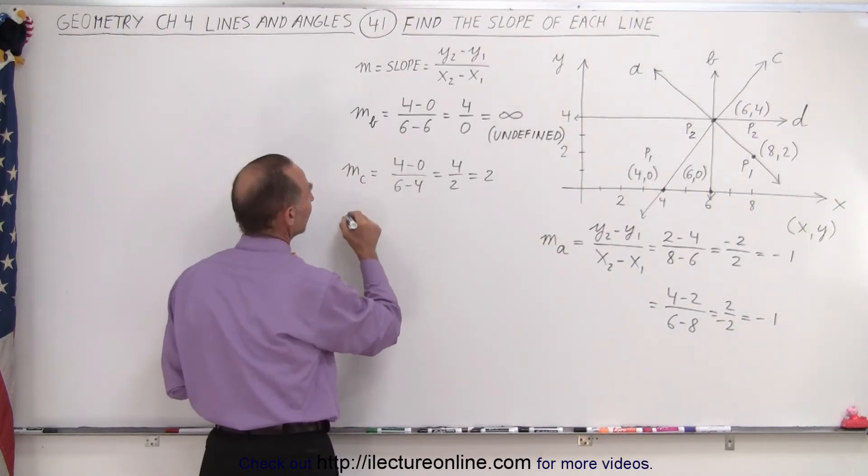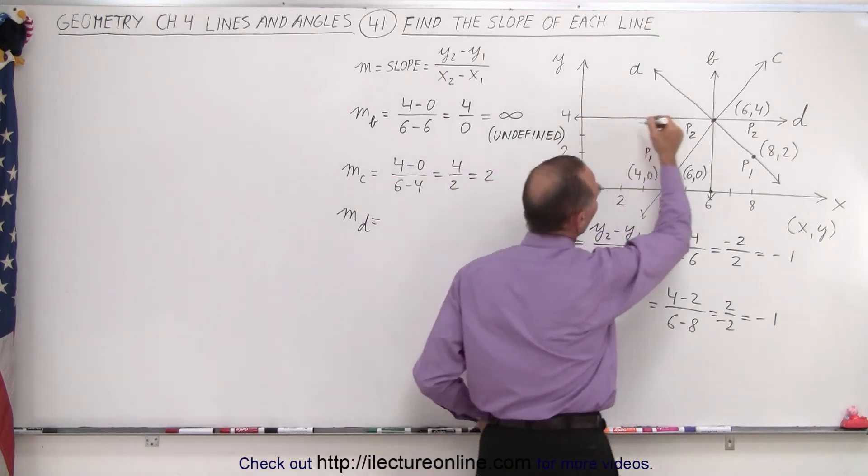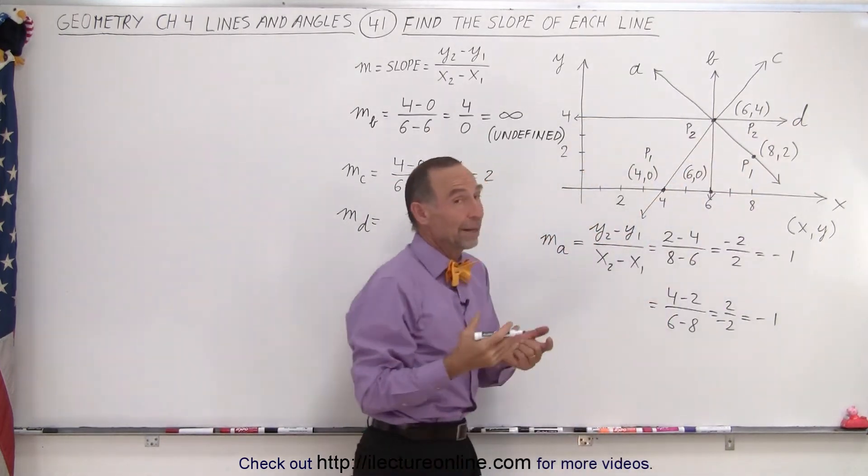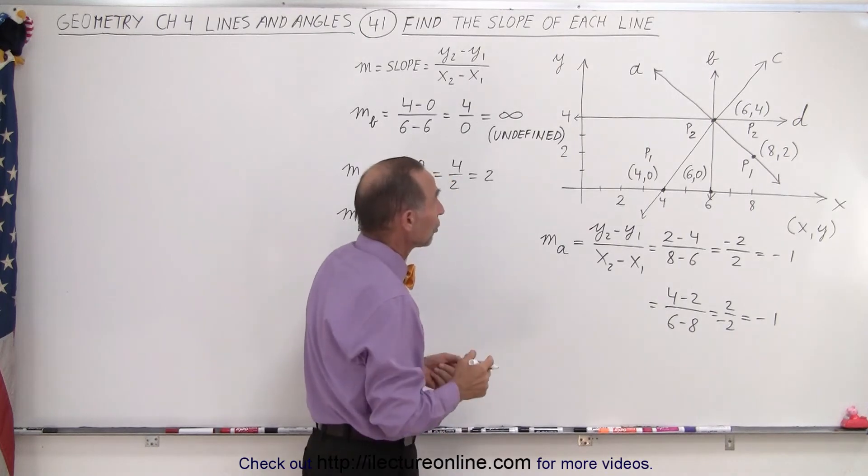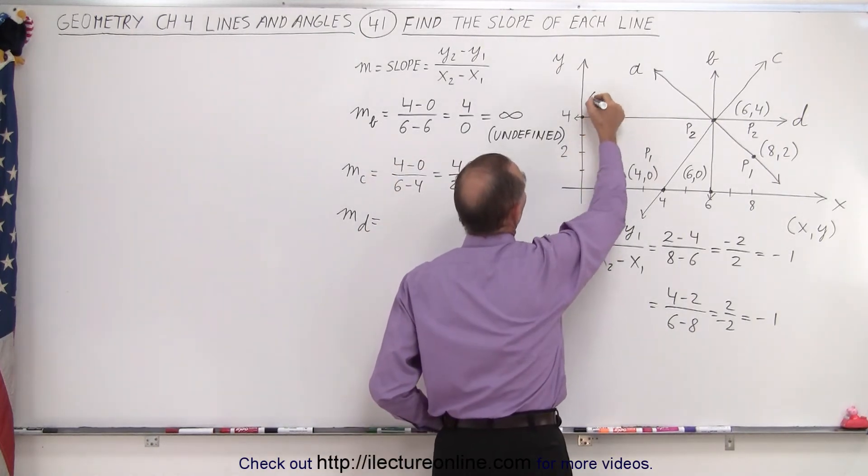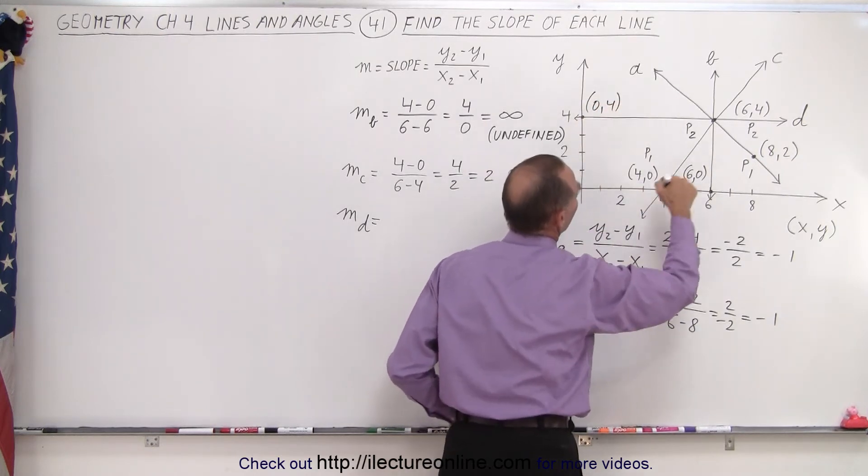And finally, we're trying to find the slope of line d. Now notice line d is horizontal. And as we should know by now that the slope of horizontal lines equals zero. But again, you can pick two points. You can pick this point right here. This is a point (0,4). The x value is 0, the y value is 4. Here you pick the point (6,4).